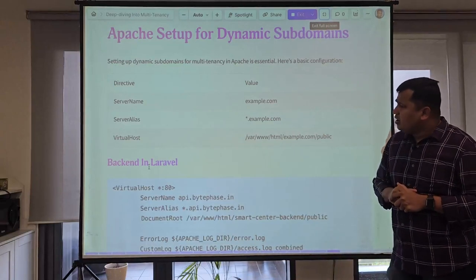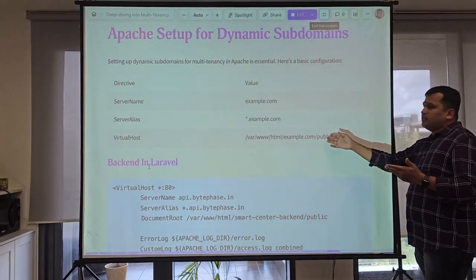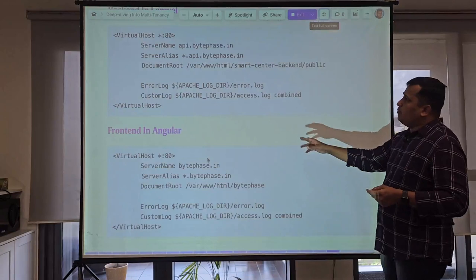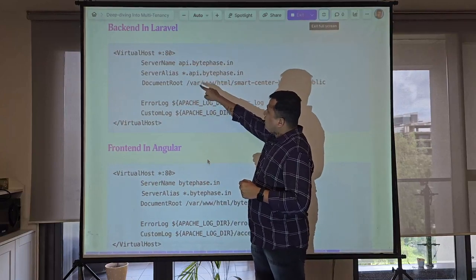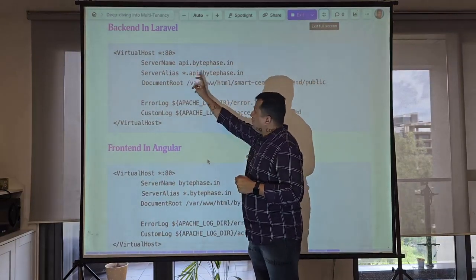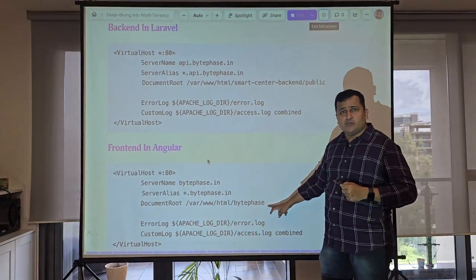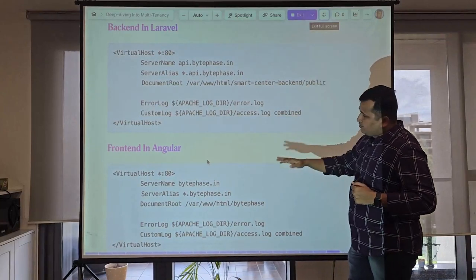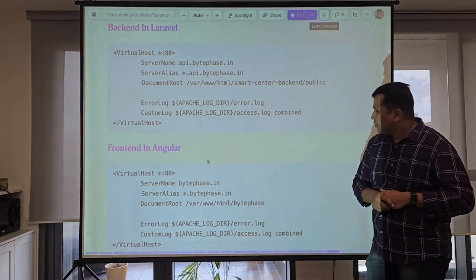For the server setup I was comfortable with Apache. My configuration has example.com and *.example.com running on the same virtual host. My backend runs on api.byteface.in and aliases like bluecat.api.byteface.in identify separate tenants. For the Angular front-end I have a different directory and repo. I have *.byteface.in sequenced so that if the alias doesn't match the API pattern, it falls back and renders the front-end.